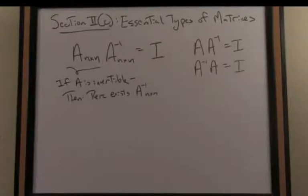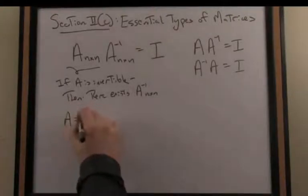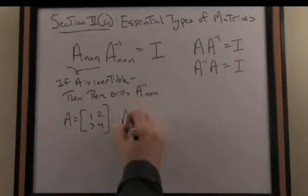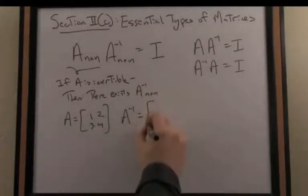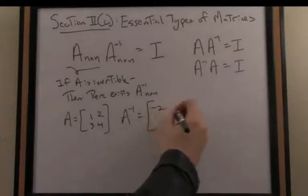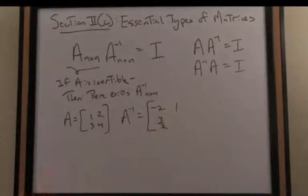Let's look at a quick example. Let's call A the matrix [[1, 2], [3, 4]]. Then I'm going to claim that there is an inverse out there for that matrix, and that matrix is [[-2, 1], [3/2, -1/2]].